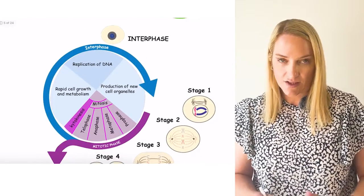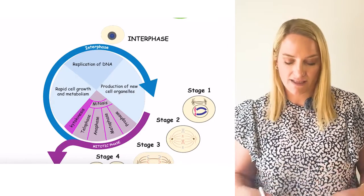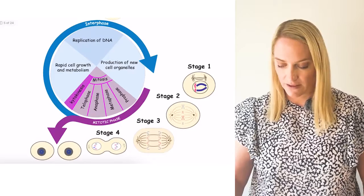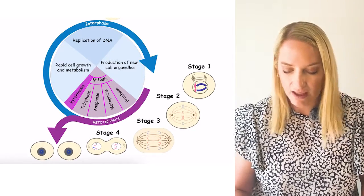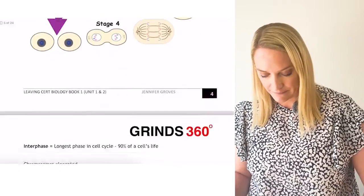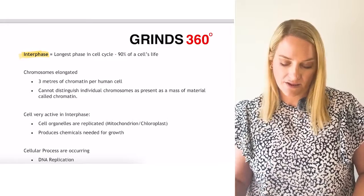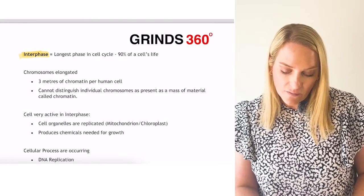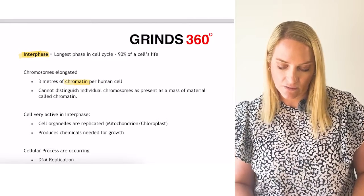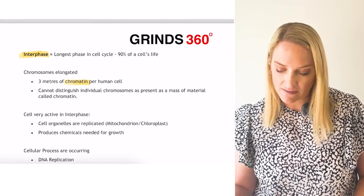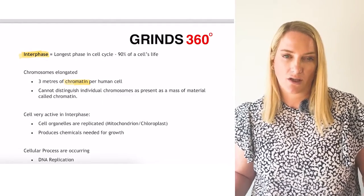Cell division consists of prophase, metaphase, anaphase, and telophase. Interphase is when the cell is getting ready to divide — it's the longest part of the cell cycle. During interphase, chromosomes are elongated and visible only as chromatin; we cannot distinguish individual chromosomes because it's a mass of material called chromatin.